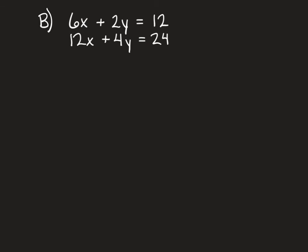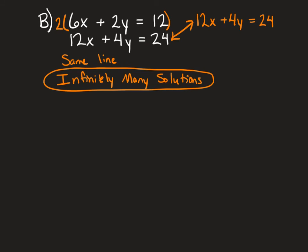How many solutions does this system have? The equations aren't already in y equals form, so one way to figure this out is to notice that if we take the top equation and multiply it by 2, we get 12x plus 4y equals 24, which matches the other equation exactly. They're the same line, so there are infinitely many solutions.